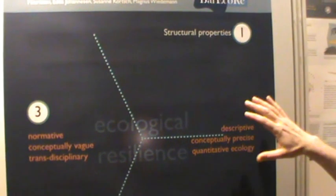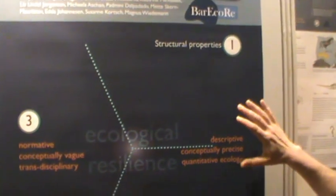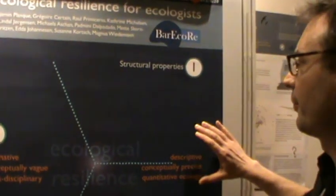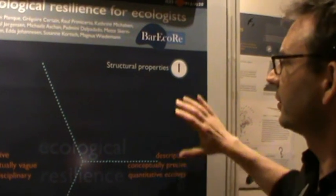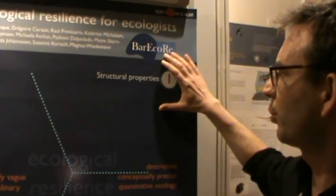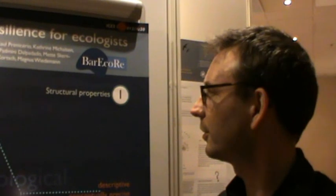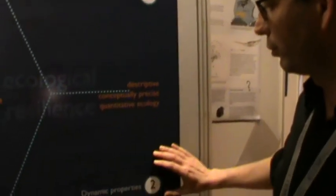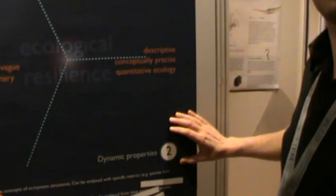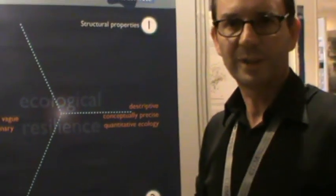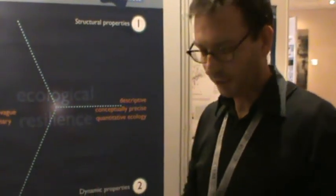The second axis applies to concepts used in quantitative ecological research, and distinguishes between structural properties — for example, taxonomic diversity in a system is a structural property — and dynamic properties, for example, a tipping point is a dynamic property.